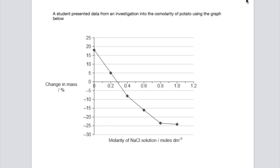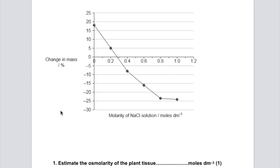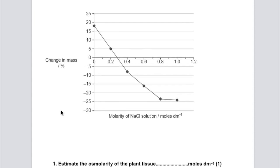So a student carried out a very similar investigation and their graph looked something like this. Let's estimate the osmolarity of the plant tissue in moles per dm cubed. Well, to get the answer to that, you would have to look at the graphical data and consider where the graph intersects this x-axis, because that represents the molarity or the concentration that corresponds to a 0% change in mass.